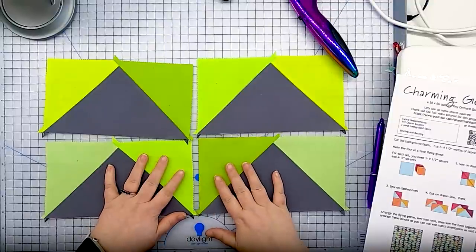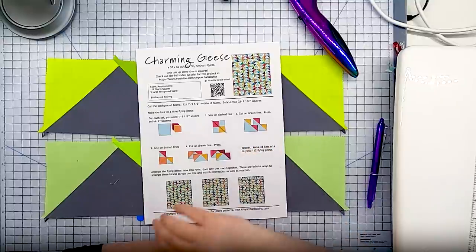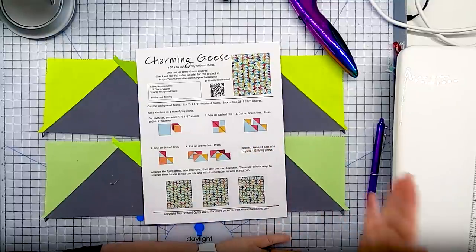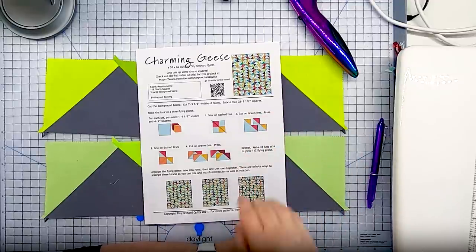So here are our four finished flying geese. They are perfect and look great and are totally a weird wonky size and that's okay because the pattern that these are for assumes that they are all the same weird wonky size.